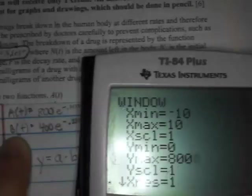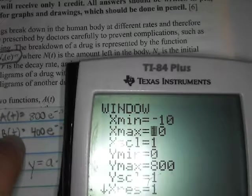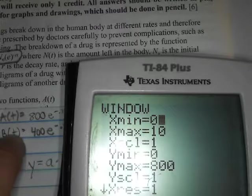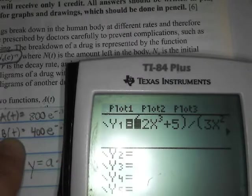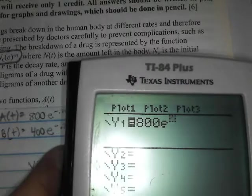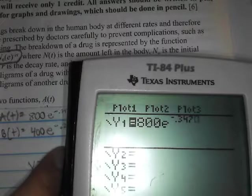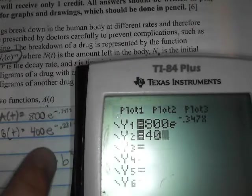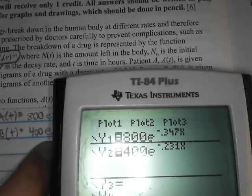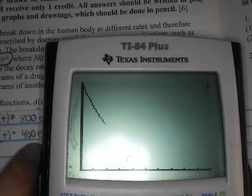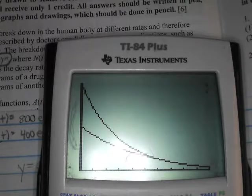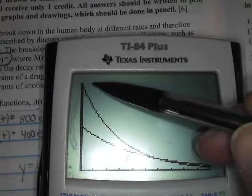So I type in both of these. 800. Then my E to the negative 0.347X. My second equation, 400, E to the negative 0.231X. So here are my two graphs. And I want to make sure I scale my graph appropriately. Label which graph is which one. So label this graph A of T. Label this graph B of T so that we know which is which. And also scale appropriately.